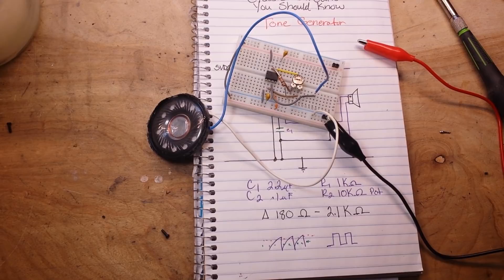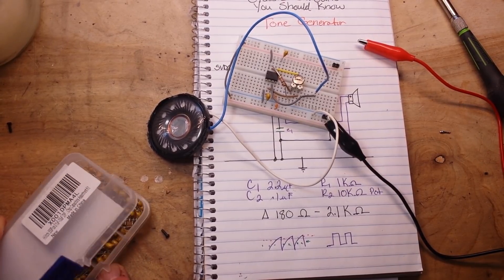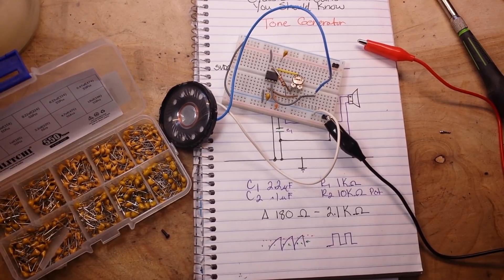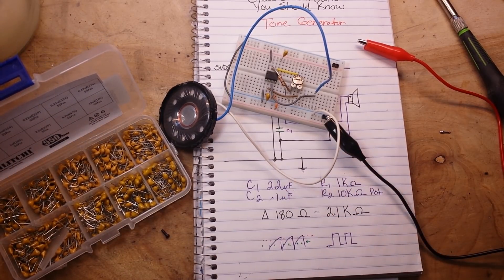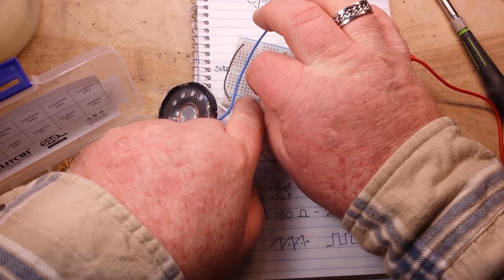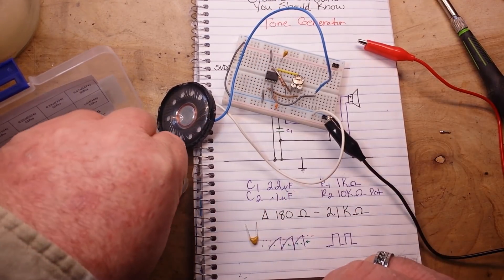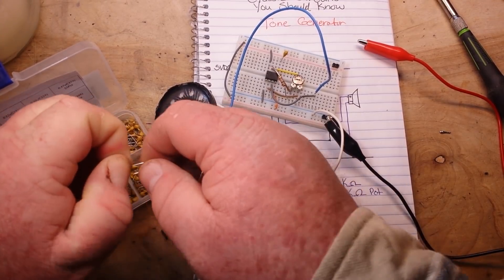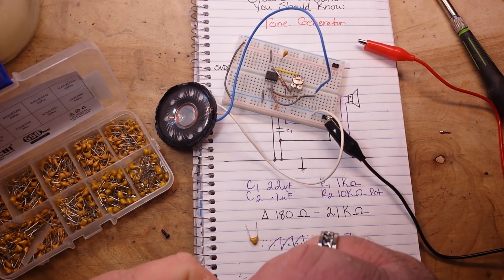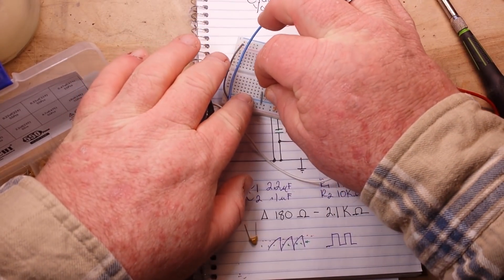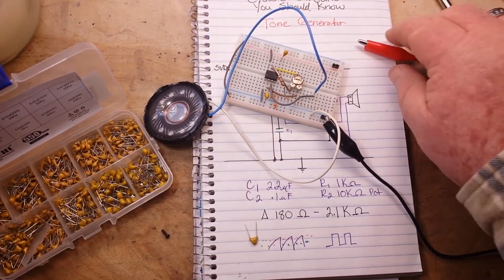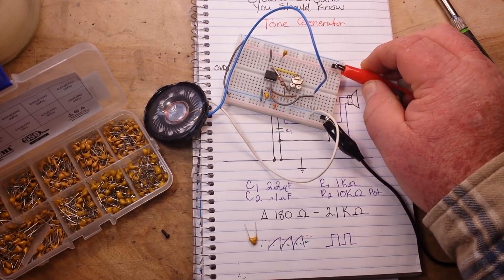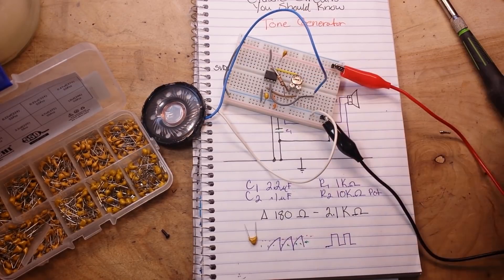Now if you want to change the range of it any more than that 2k that we can play with there, well then you're going to have to change this capacitor. So we're at 2.2 microfarad there, let's go to 10 microfarad. Now what do you think is going to happen? Will the frequency be higher or lower? Lock in your votes now, ready, it's lower.